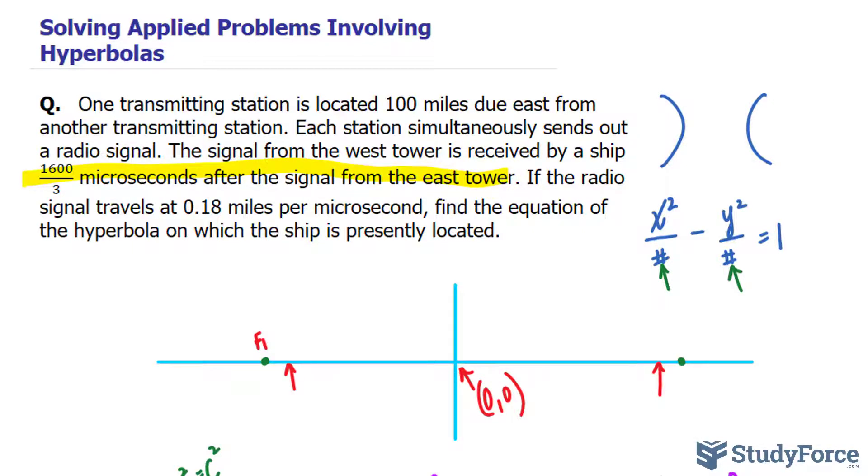This means that the ship is closer to the east tower, east, than it is to the west. It has to be somewhere along this trajectory. So this is probably where the ship is, closer to the east tower, than it is to the west tower.